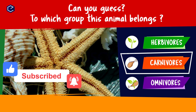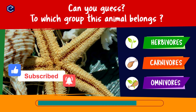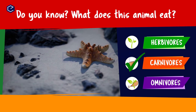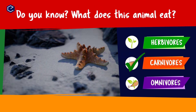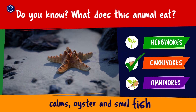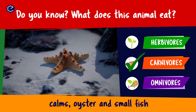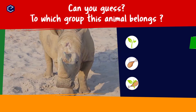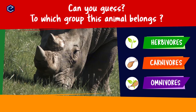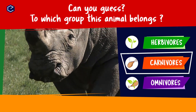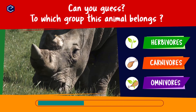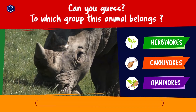Can you guess to which group this animal belongs? Herbivores, carnivores, omnivores. Do you know what this animal eats? A starfish eats clams, oysters and small fish. So starfish is a carnivore. Can you guess to which group this animal belongs? You guess the answer and post it in the comment section.